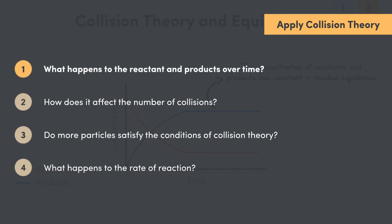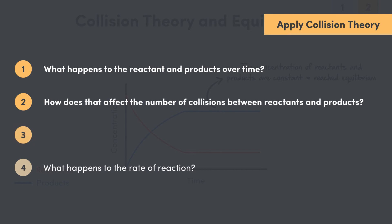One, what happens to the reactant and product particles over time? Two, how does that affect the number of collisions between the reactants and between the products? Three, do more reactant or product particles now satisfy the conditions of collision theory? And four, what happens to the rate of the forward and reverse reaction?